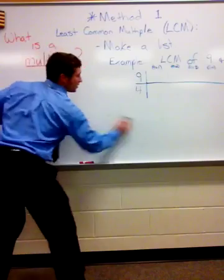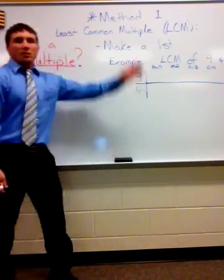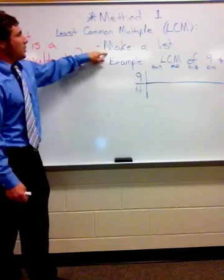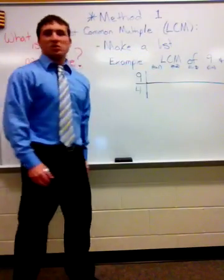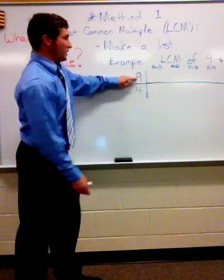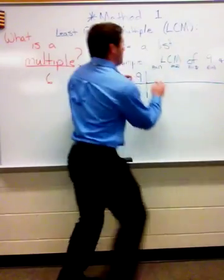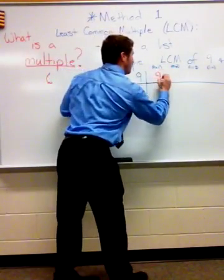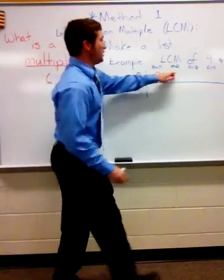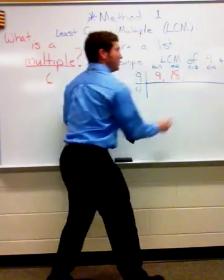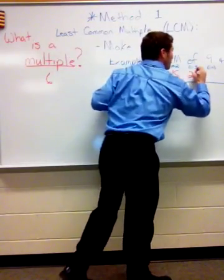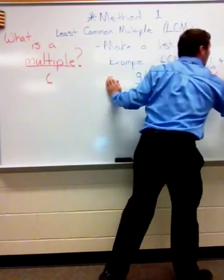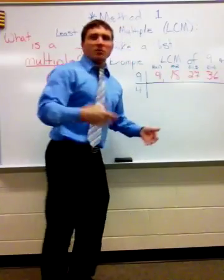Method one for finding least common multiple: make a list. So I'm going to list all the multiples for nine. I'll start out. Nine times one is nine, that's one multiple. Nine times two is eighteen, nine times three is twenty-seven, nine times four is thirty-six, nine times five is forty-five. I could keep listing them but I'm going to stop right here.